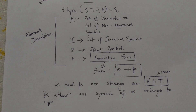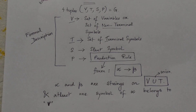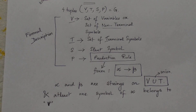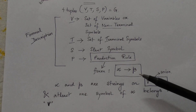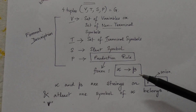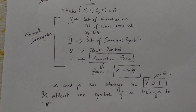Let me take an example to show how to identify what are the non-terminal symbols, what are the terminal symbols, what is the start symbol, and how to identify the production rule by the format alpha tends to beta (α → β).